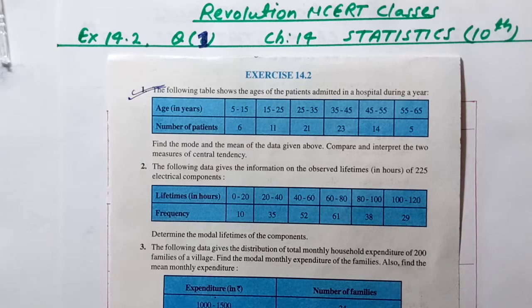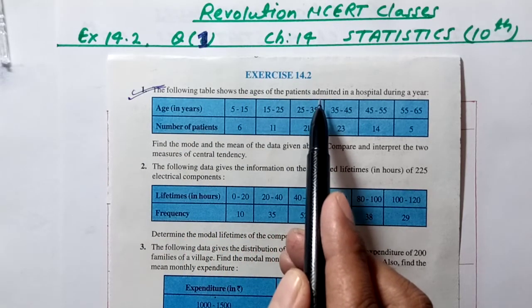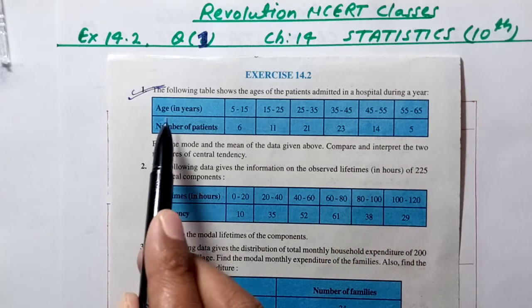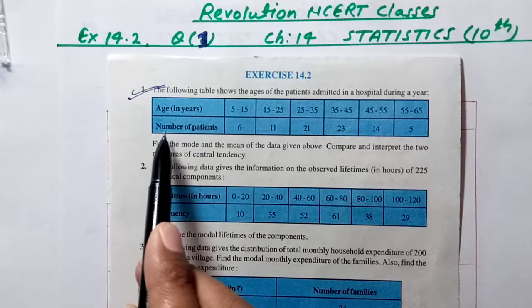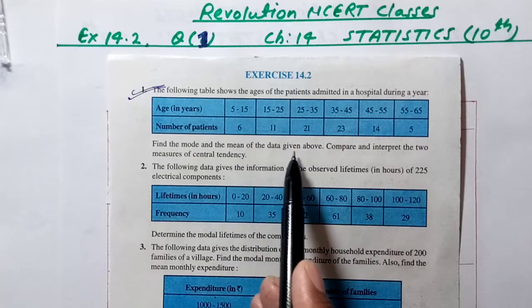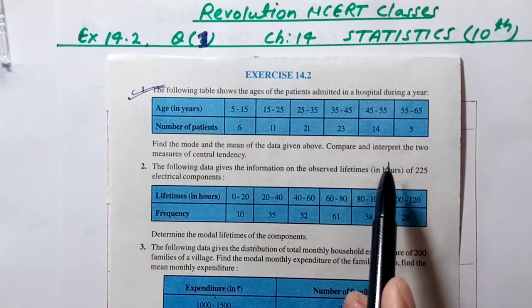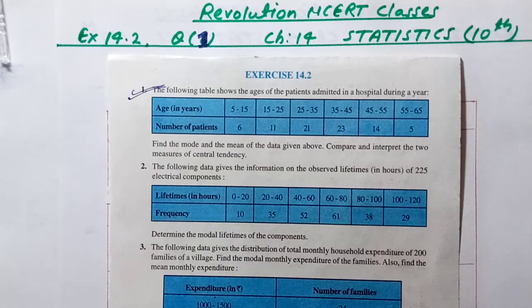Welcome to Revolution NCERT Classes, Exercise 14.2, Question Number 1, Chapter 14 Statistics, Class 10th. The question is: The following table shows the ages of patients admitted in a hospital during a year. Find the mode and the mean of the given data. Compare and interpret these measures of central tendency.